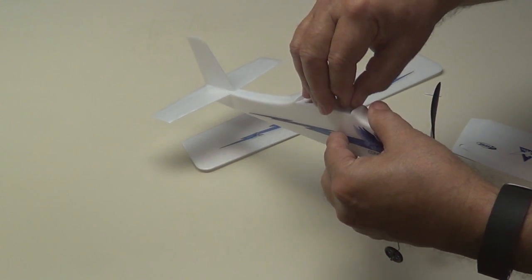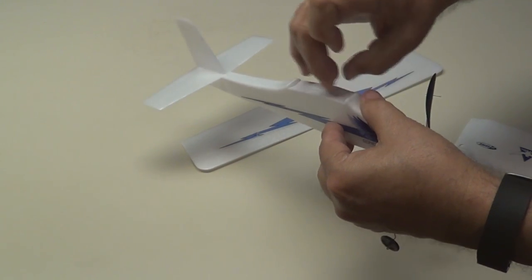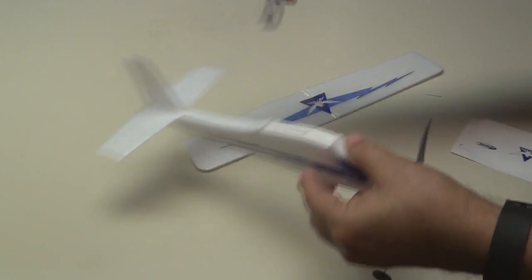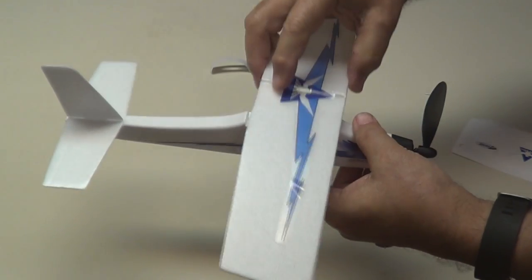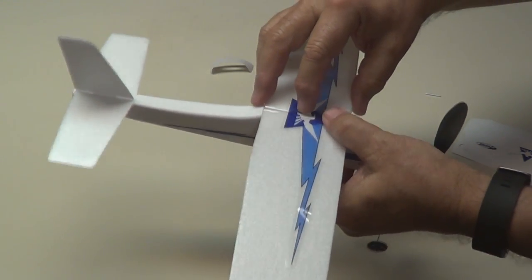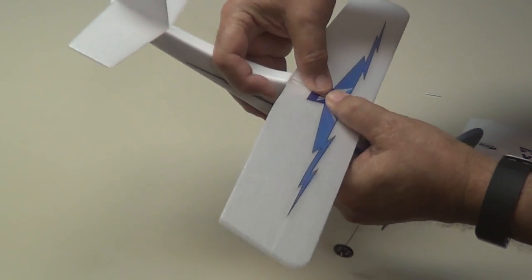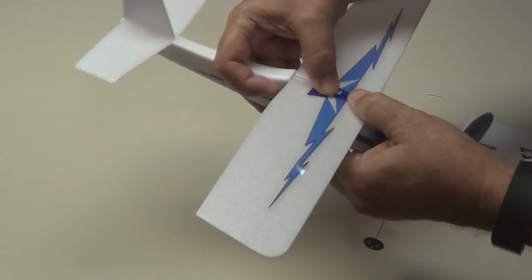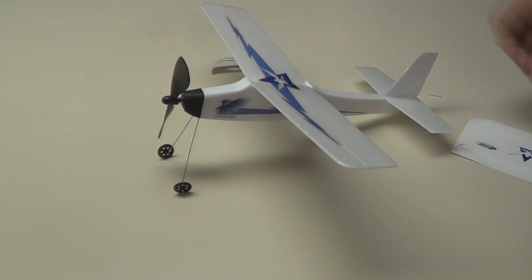Pull the top piece off. There we go. Now this will hold the wing on. See, they don't tell you this in the directions. You got to figure this out as you go. Now that wing's on there.